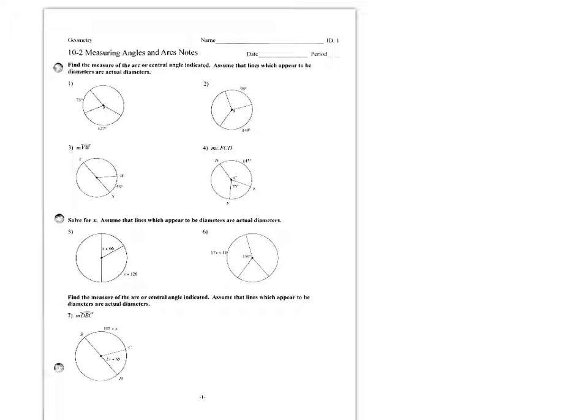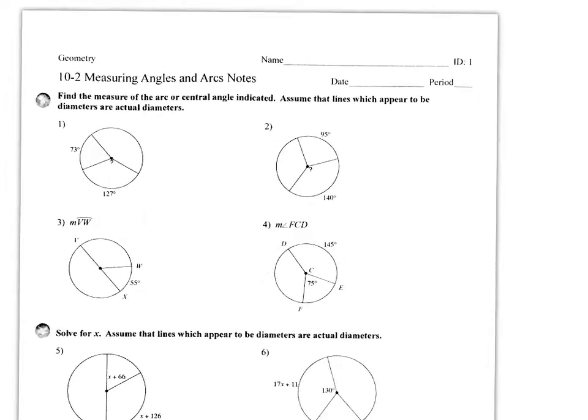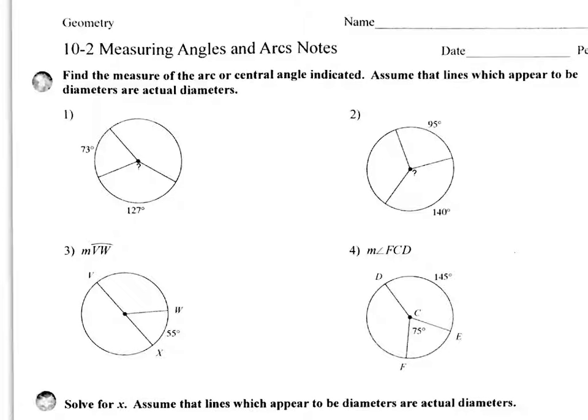A central angle is an angle formed where the vertex is at the center of the circle. Now these problems are really easy in terms of finding these. All that you have to know here is that the measure of the angle is equal to the measure of the arc. The arc is 127 degrees, so that is also the measure of the angle, 127 degrees. Let me give you some other vocabulary here real quick.